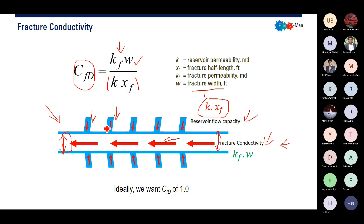We don't want the fracture conductivity to be very large compared to reservoir flow capacity, or vice versa. That's why, when we talk about dimensionless fracture conductivity CFD, ideally we want CFD of one, so that there will be a balance between fracture conductivity and reservoir flow capacity.